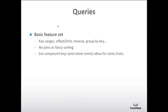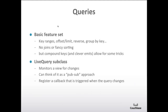Going deeper into queries, there's a basic feature set: key ranges, offsets, and limits; you can reverse the query and group the results by key. You don't have joins or secondary sorting, but you can accomplish most of this by using compound keys and being clever about the way you emit things. We provide a live query subclass which monitors a view for changes in a pub-sub approach — after you create a query you register a callback that gets triggered whenever the query changes. This is great because it promotes good MVC development where the views can just monitor the models and be automatically refreshed.